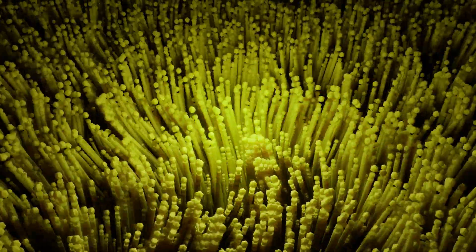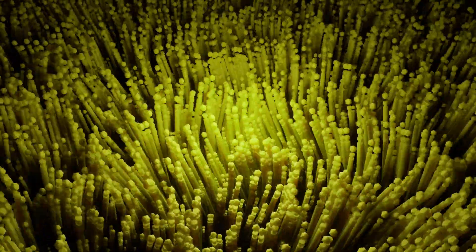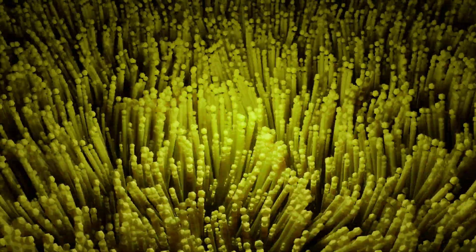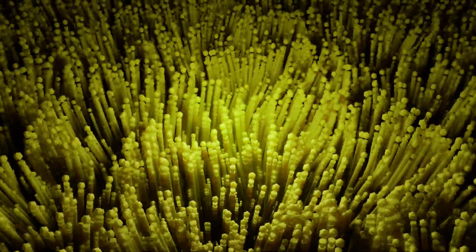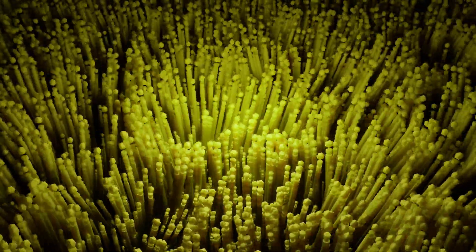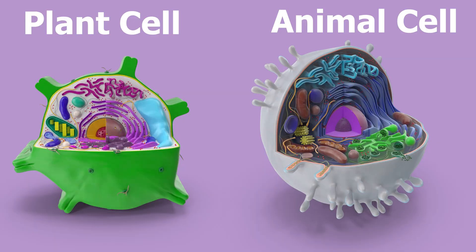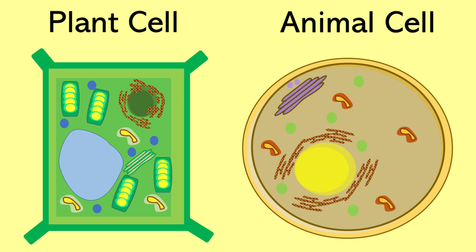Every living thing is made up of cells, and these cells work together to help the organism grow, move, and stay healthy. In this video, we will take a closer look at eukaryotic cells, more specifically plant and animal cells. Cells are made up of organelles, which are tiny parts inside the cell that do specific jobs, much like organs in our bodies.